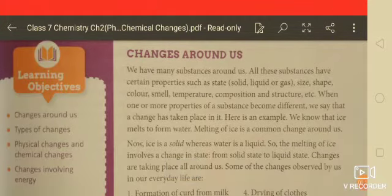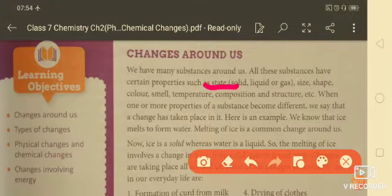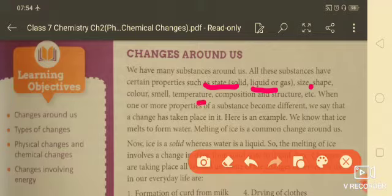Properties such as state (solid, liquid, or gas), size, shape, color, smell, temperature, composition, and structure. When one or more properties of these substances become different, we say that a change has taken place in it.